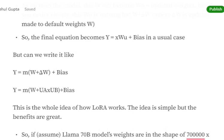In this equation, we are not playing around with the actual W, which is 70 billion in case of Llama, but we would be updating just UA and UB and then eventually fine-tuning the model this way.